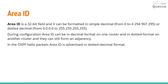Area ID is a 32-bit field and it can be formatted in simple decimal from 0 to a large number, or in dotted decimal from 0.0.0.0 to 255.255.255.255. During configuration, the area ID can be in decimal format on one router and dotted decimal format on another and they can still communicate and form adjacency. In OSPF Hello packets, the area ID is advertised in dotted decimal format.